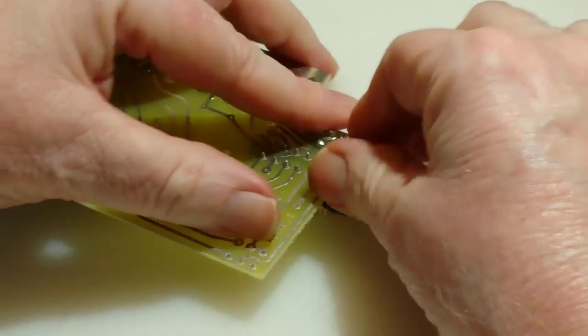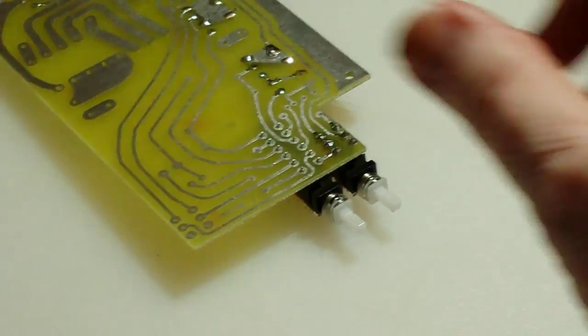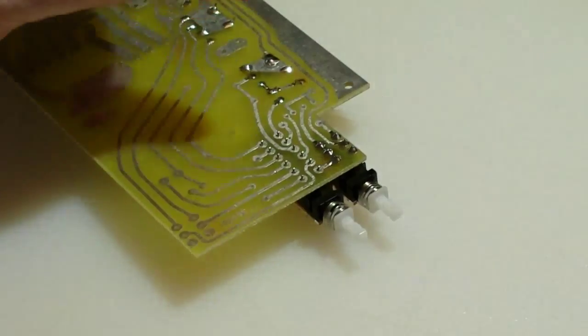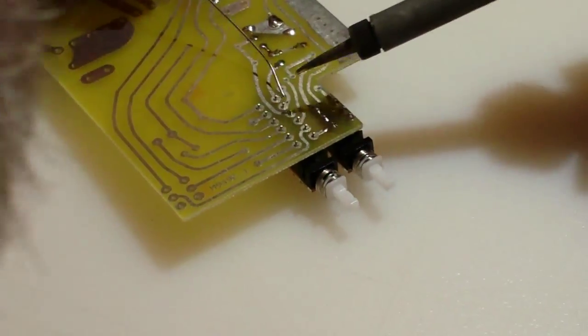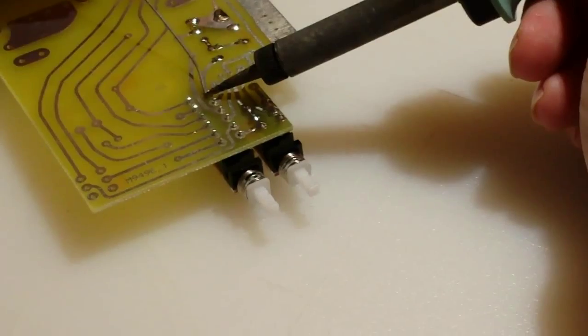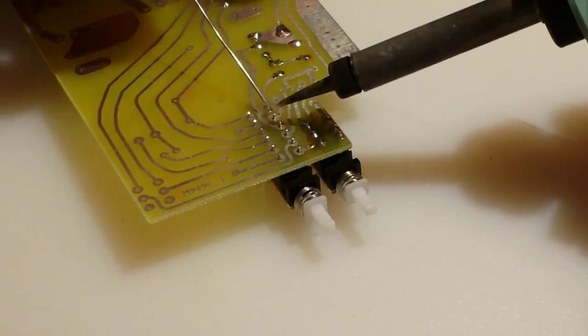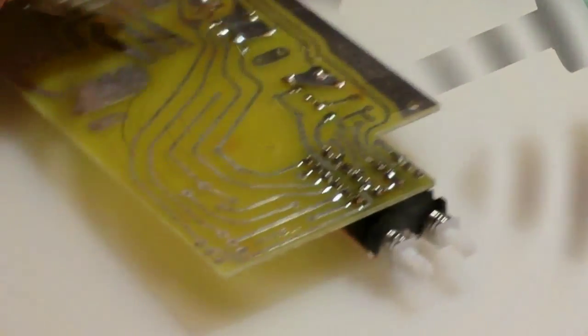You'll see I push quite hard on this switch. This is the 30 slash 300 watt switch. Making sure it's absolutely flush and then soldering it in place.